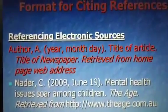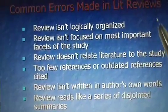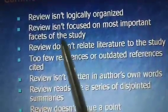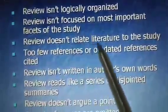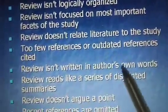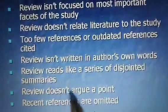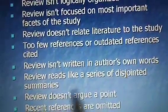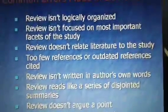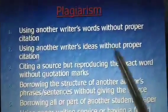There are some common errors made in literature reviews you should be alert to. These include: the review isn't logically organized; the review isn't focused on the most important facets of the study; the review doesn't relate the literature to the study; too few or outdated references cited; the review isn't written in the author's own words; it reads like a series of disjointed summaries; the review doesn't argue a point; and recent references are omitted. Avoid these errors for better research.